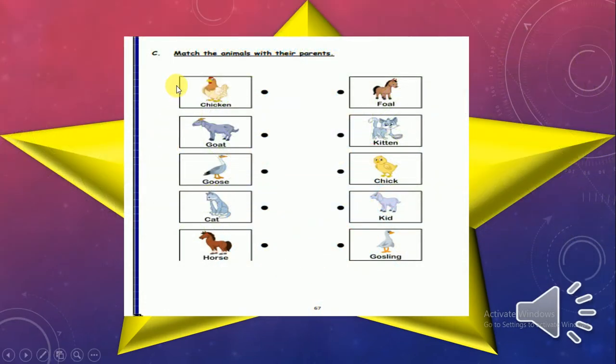Wow, we wanna match the animal with their parents. Animal with their parents. So first, chicken. We gonna match chicken with foal, kitten, chick. Chick. Excellent. Okay.